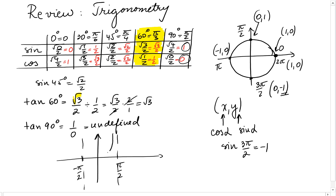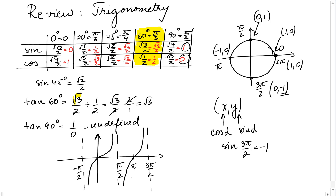That's a vertical asymptote, so the graph looks like that. Then it repeats going through pi and 3 pi over 2, where 3 pi over 2 is also a vertical asymptote.